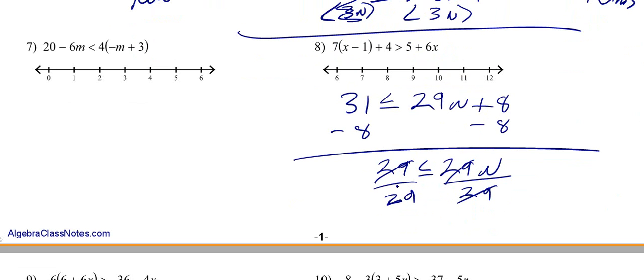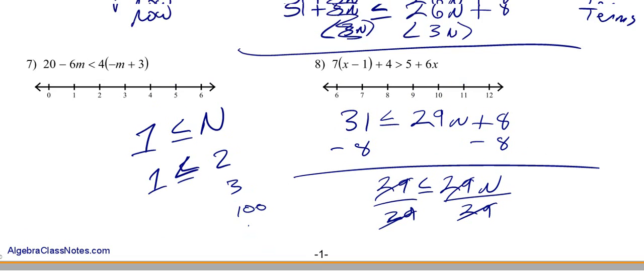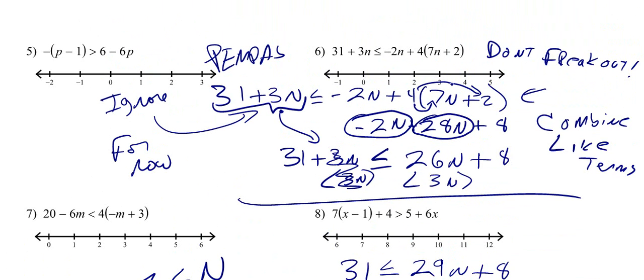Those cancel out, that becomes a 1. So we know 1 is less than or equal to n. To graph it, just do something that makes it true. Plugging in a 2 makes that true, as well as a 3 or 100, whatever. Any number, it doesn't matter. So our endpoint was 1, and we want to include everything bigger than 1.